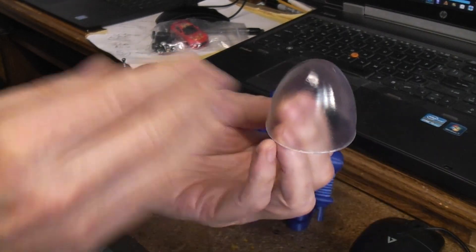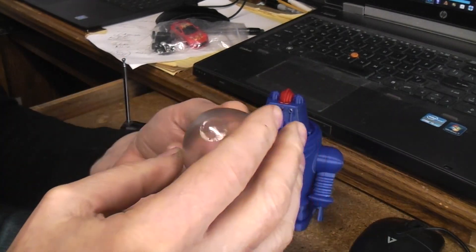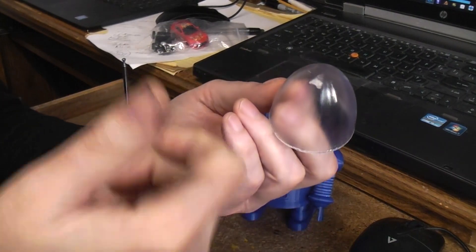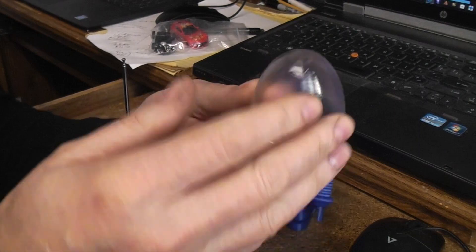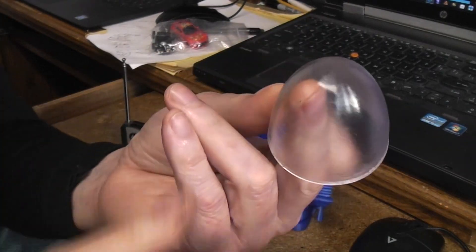So I went ahead and cured it and then gave it a couple of coats with a spray can clear coating, UV protection and that sort of stuff, and it kind of cleared it back up a little bit.